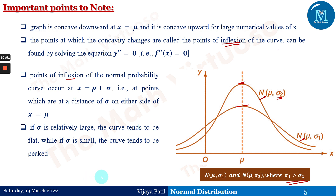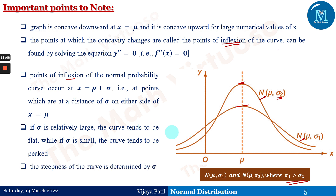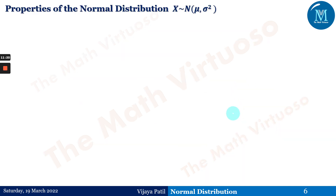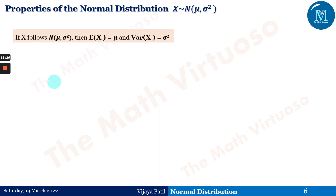These properties are important background for solving different types of questions, whether descriptive or MCQ. The stiffness of the curve is determined by σ. For the properties of normal distribution: if X follows N(μ, σ²), then E(X) = μ and Var(X) = σ². For the normal distribution, mean, median, and mode coincide and are equal.